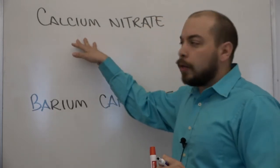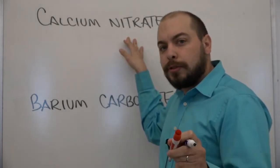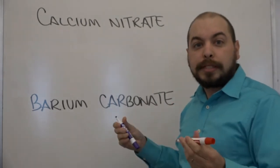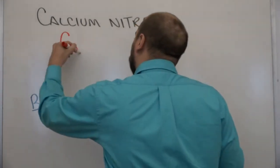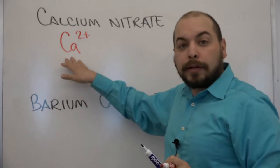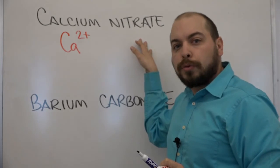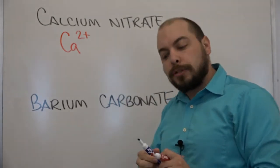The first one we want to look at is calcium nitrate. Now calcium nitrate, again we start by writing the actual element symbol of calcium CA and because it's an alkali earth metal it's got a two plus charge. Nitrate NO3 has a minus one charge.